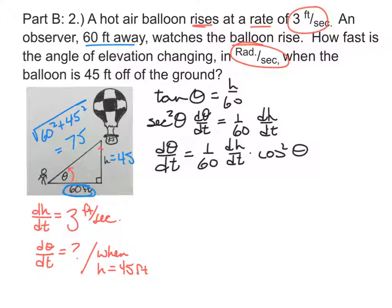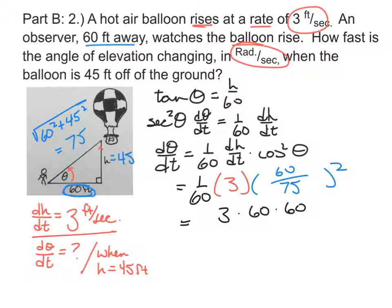And we have all the information we need to find dθ/dt and just plug in some values. We'll start with the 1 over 60. And we know that dh/dt is given right here as being 3. And we'll have the cosine squared. We've just seen that the cosine being adjacent over hypotenuse will be 60 over 75. And let's just do a little bit of algebra. I'm really going to expand things real quick because 60 squared is going to be 60 times 60. Then in the denominator, we'll have 60 and 75 squared, which will be 75 times 75.